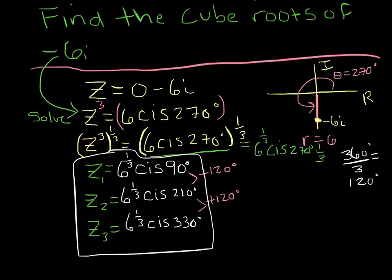And again I did this in the last video, you don't have to do this, but just to show you if you graph them they're all evenly spaced around the origin here. So cube root of 6 is a number that's probably bigger than 1 but less than 2, because the cube root of 8 is 2 and the cube root of 1 is 1. So it's a number between 1 and 2.